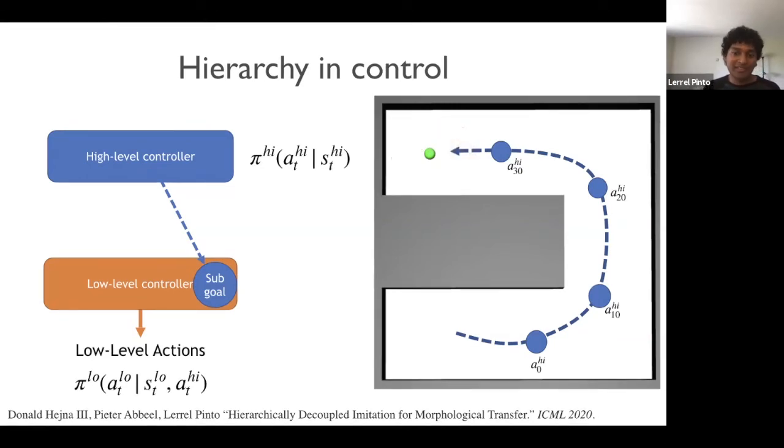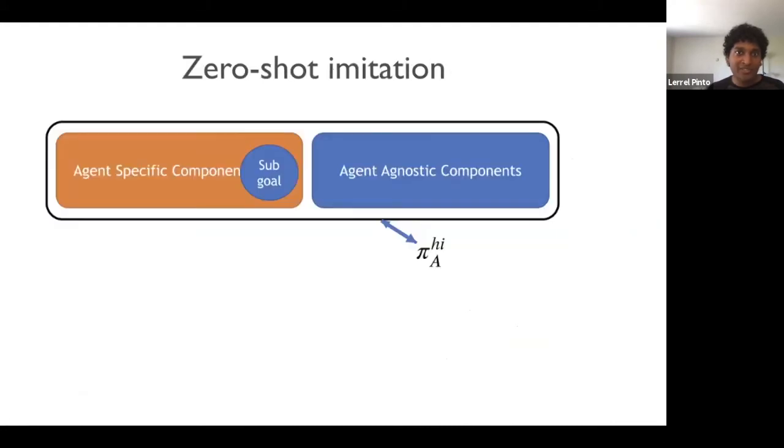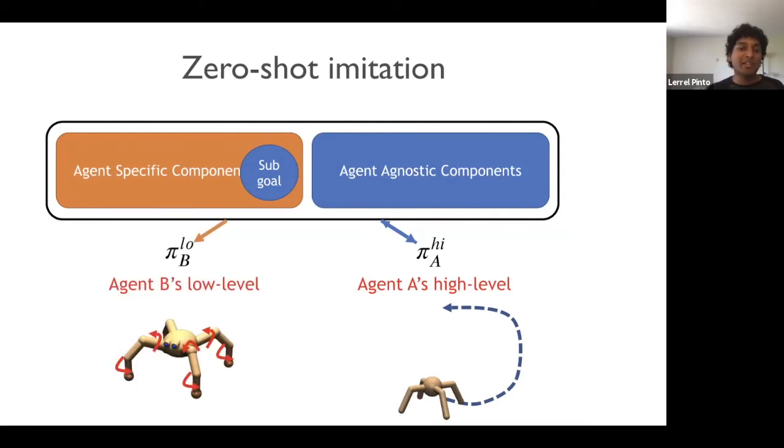Now, if you have a new agent, let's say a quadruped now, we can use the same high-level but switch the low-level out with the quadruped's own low-level. And this means that you can now transfer a policy. So this leads into the most simple form of transfer, which is zero-shot imitation, where if you want to transfer a policy from agent A to agent B, you just simply take agent A's high-level and combine it with agent B's low-level.